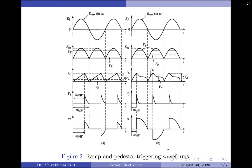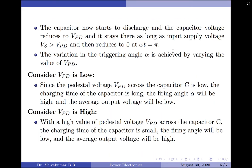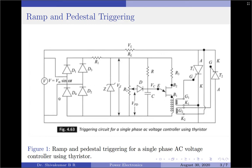We will consider two cases: one when Vpd is low and one when Vpd is high. The left set of waveforms is for low pedestal voltage, and the right is for high Vpd. The name 'ramp and pedestal' comes from the shape of the waveforms. Looking first at the case when the pedestal voltage is high: the input shows a DC pulsating component because the circuit uses a bridge rectifier, so the AC is rectified to pulsating DC.